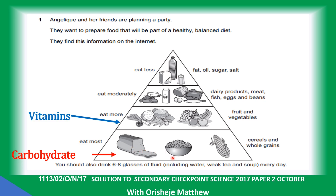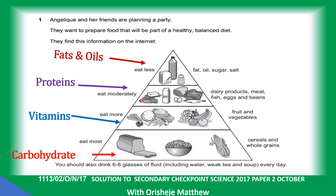Next are vitamins — you have vegetables and fruits. Food that needs to be eaten moderately: you have protein, you have milk, you have egg, you have chicken and cheese. Then food that you need to eat less of: fat and oil.